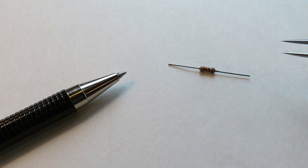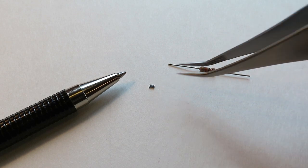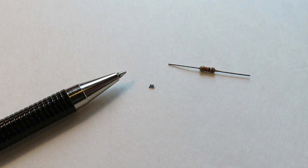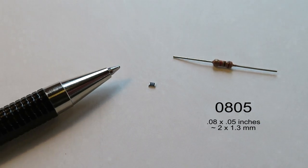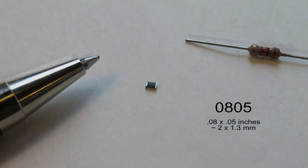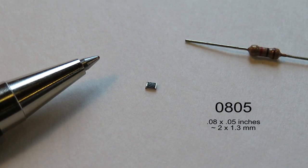For size comparison, this through-hole component is about the smallest part that we used when we started Z-Axis in 1989. This equivalent SMT component is in an 0805 package. It's 0.08 by 0.05 inches, about 2 by 1.3 millimeter.